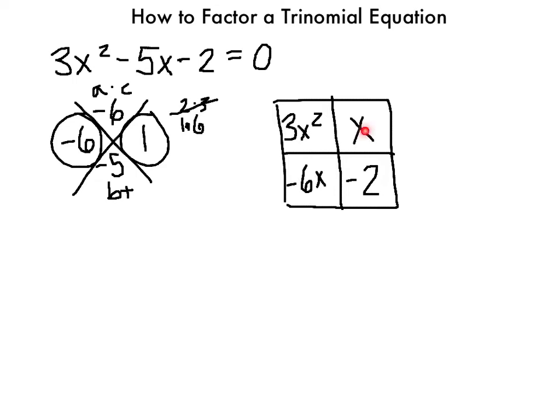The order of negative 6x and 1x in the box doesn't matter — you can put negative 6x on top if you want, it won't change your answer. Once you've set up the box, you need to find what's on the outside by looking for the GCF. You have to line the terms up and find the greatest common factor of those two terms.